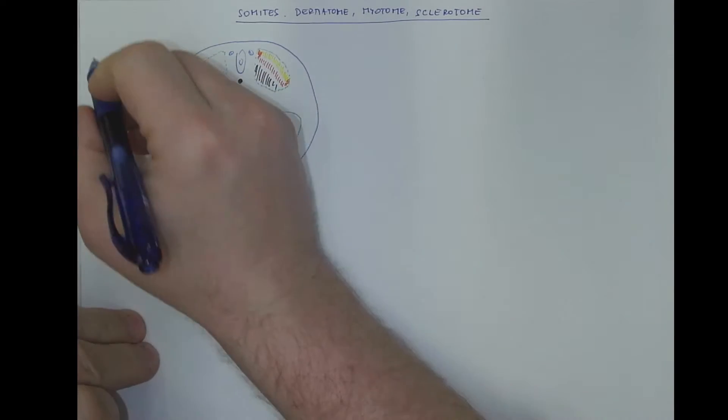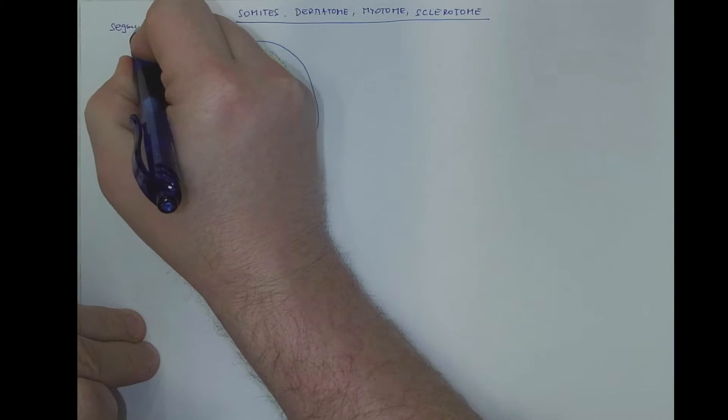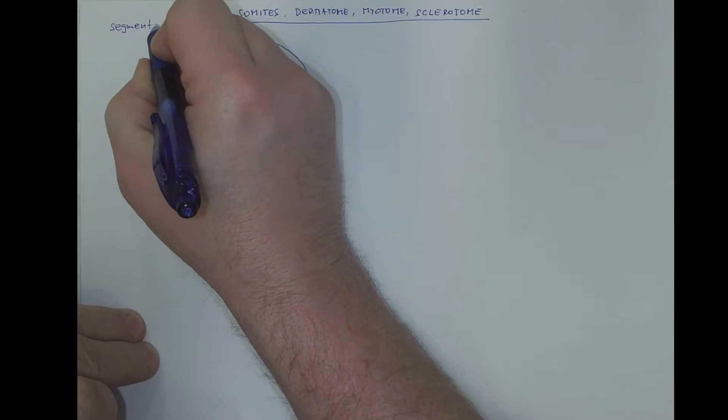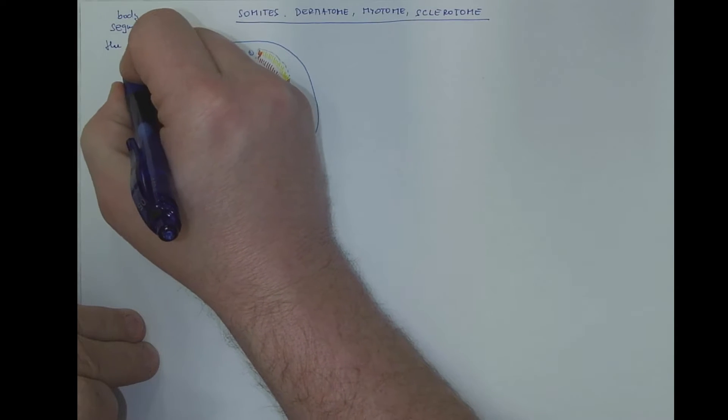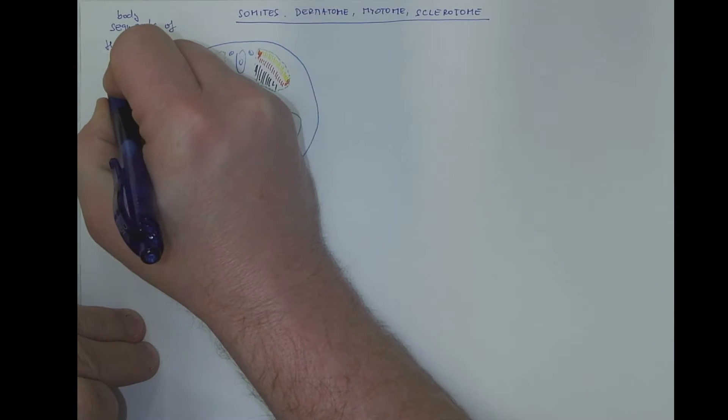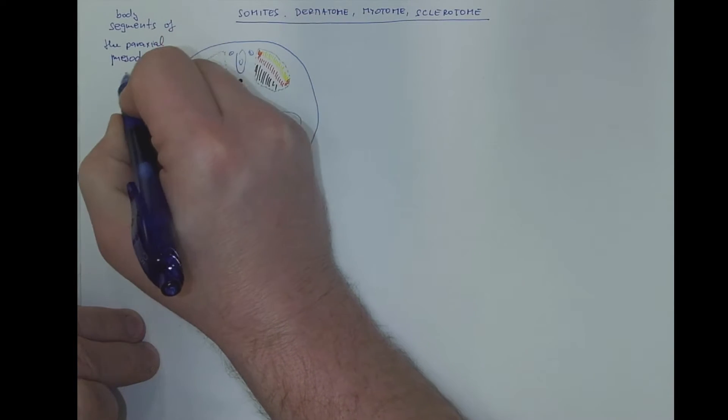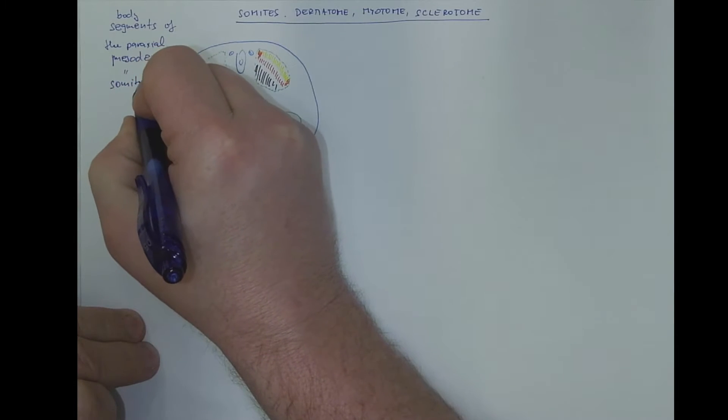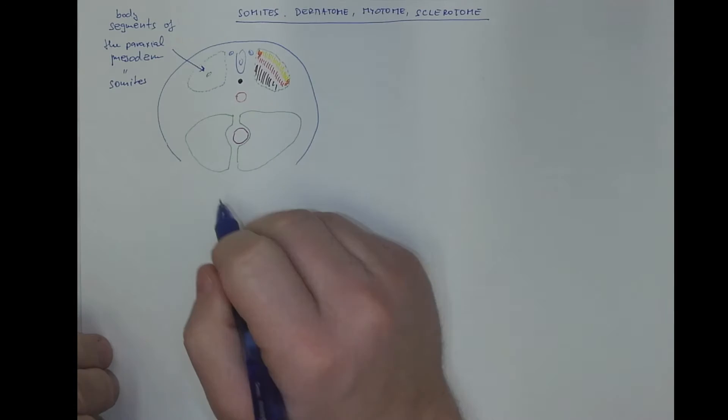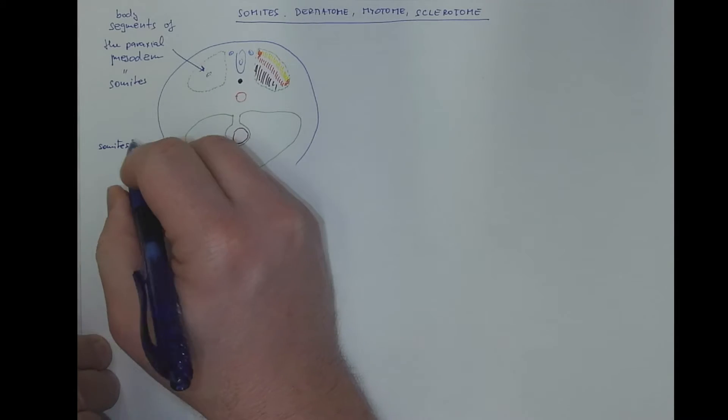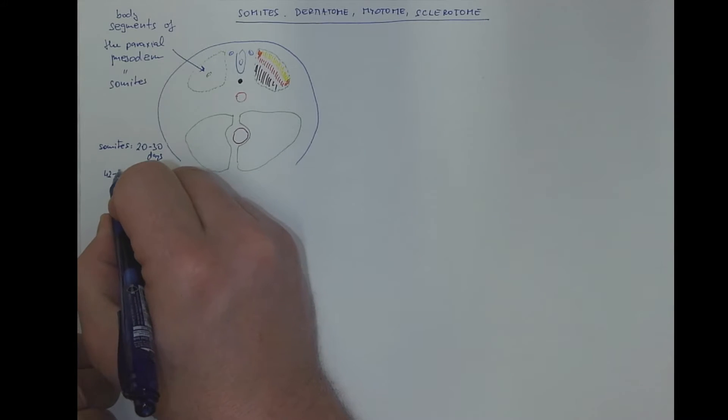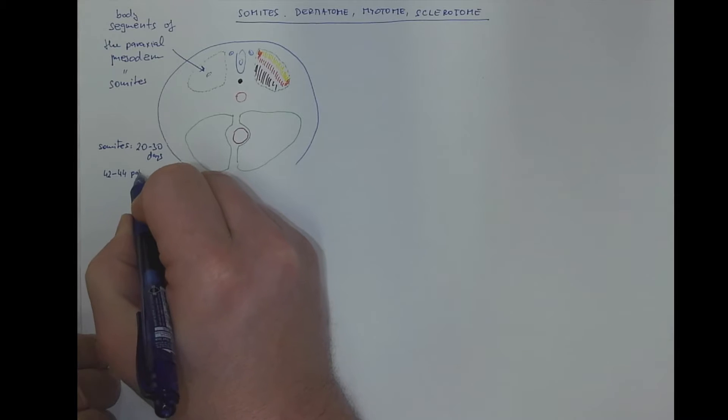Let's label the scheme. Body segments of the paraxial mesoderm are called somites. This is one of the somites. We got many somites. The somites can be visible between the embryonic day 20 to 30, and we got all together 42 to 44 pairs of somites.